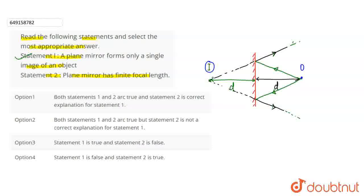These two rays, when extended backward, meet virtually at this point. This is the image. Now for statement 2: plane mirror has finite focal length. This statement is wrong. The focal length is infinite because it is straight, there is no curved part. It means option 2 is wrong because it says finite focal length, which is wrong. The focal length is infinite.